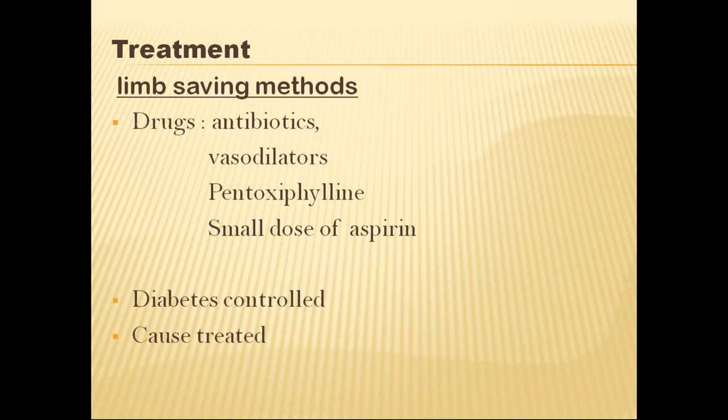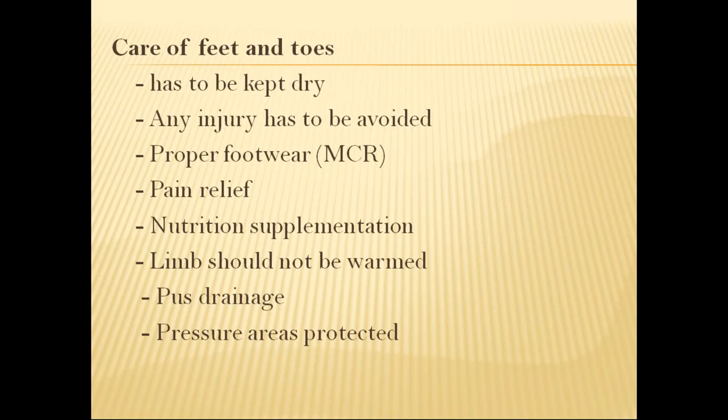Treatment options are either limb-saving methods or amputations. Many wet gangrene patients have diabetes, so diabetes must be controlled first and the etiology addressed. Drugs including antibiotics, vasodilators, pentoxifylline, and small-dose aspirin should be given. Care of the feet and toes is essential — they should be kept dry, injury avoided, and proper footwear worn. Pain relief and nutritional supplementation should be given. Limbs should not be warmed. Any pus seen must be drained, and pressure areas protected to prevent pressure sores.